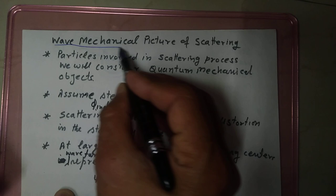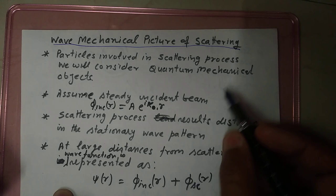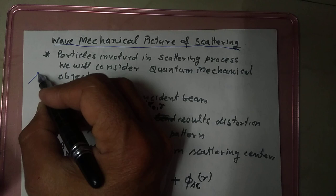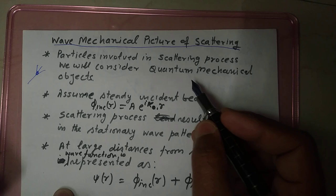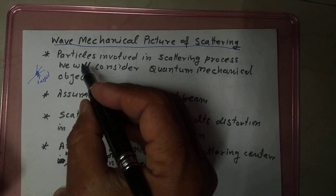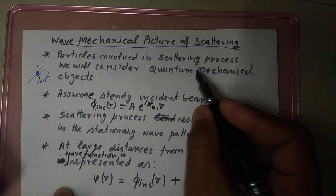In this video, we will discuss the wave mechanical picture of scattering. In scattering, when we have a beam of particles, here is the beam of particles and here is the target. The particle will get scattered in all directions. This is simple scattering, and here we will discuss the wave mechanical picture.